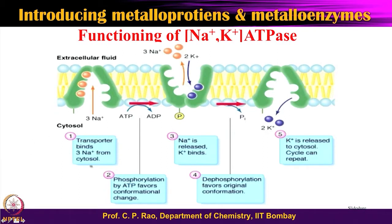The transporter binds 3 sodium ions from the cytosol, then there is phosphorylation by ATP. The sodium affinity is decreased and sodium is released. Then comes the dephosphorylation step. At this stage, potassium is bound and then released. This is shown as steps 1 through 5. You understand that the protein has different sites for sodium binding and potassium binding, their affinity varying depending upon protein conformation. Phosphorylation and dephosphorylation drive the conformational changes.